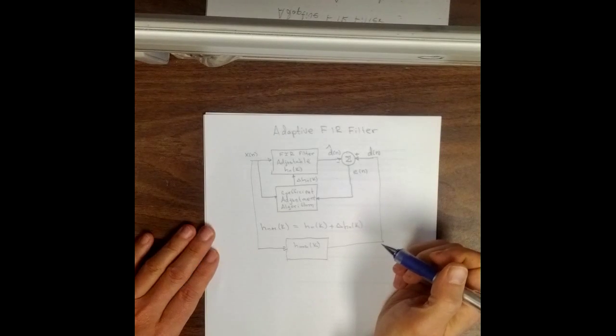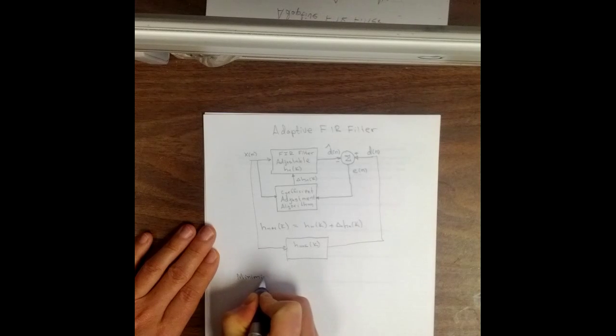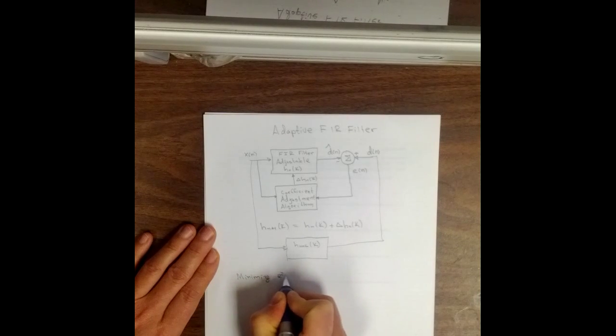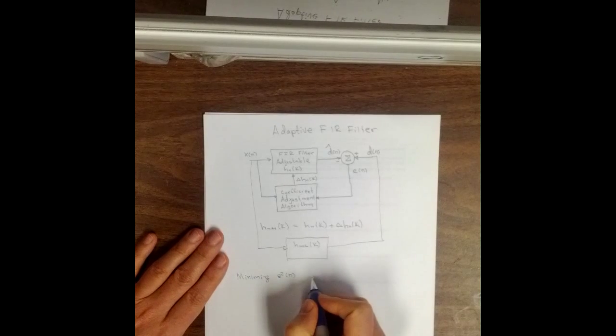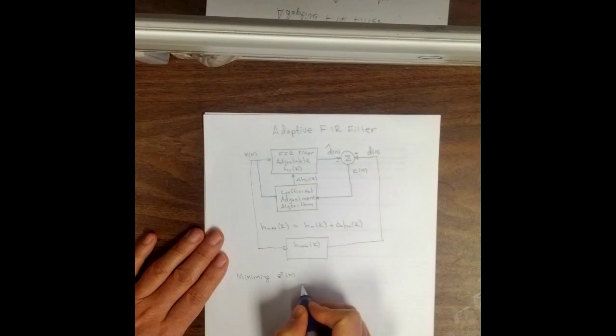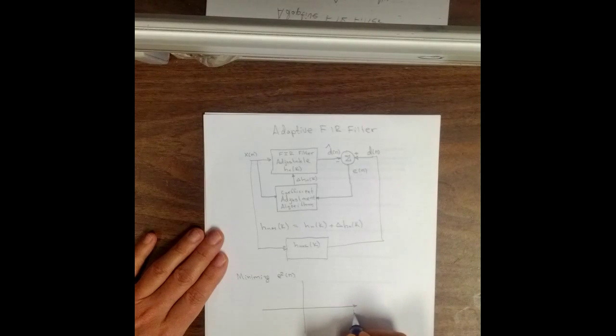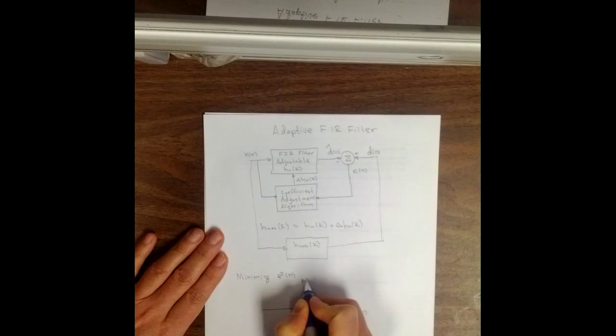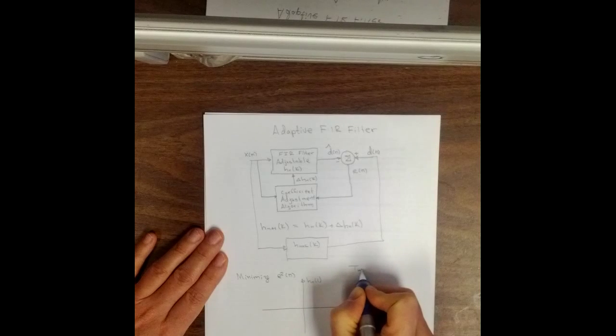So what we'd like to do is minimize e squared of n. So let me graph you what e squared of n might look like in the situation where we only have two coefficients. Here's the first coefficient, h sub n of 0, and here's the second coefficient, h sub n of 1. So this is a two coefficient filter.